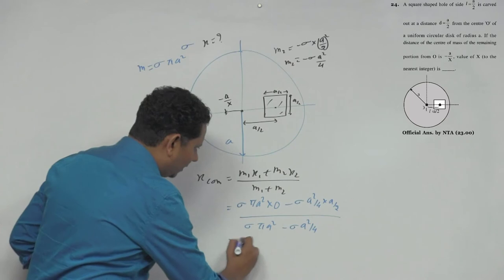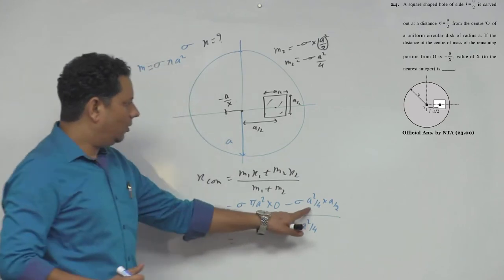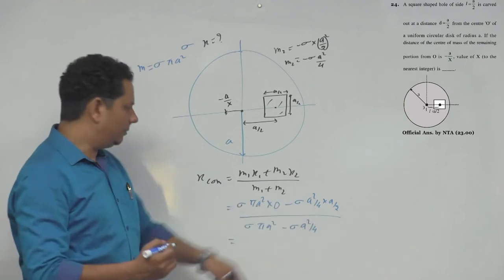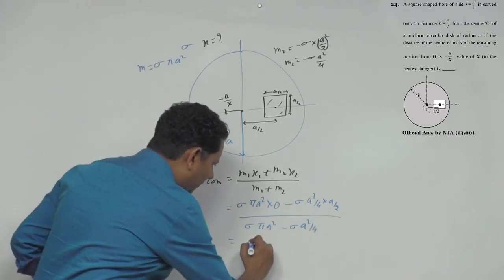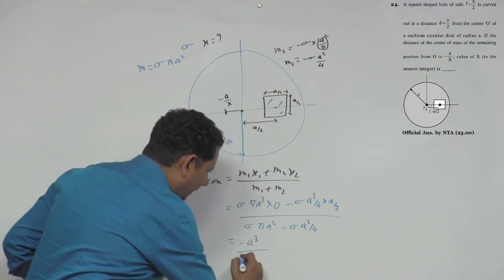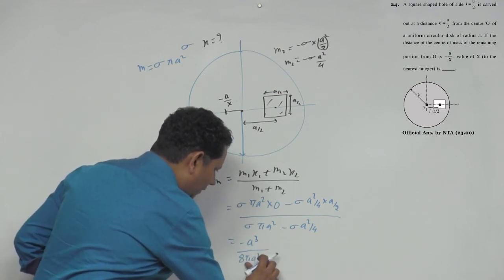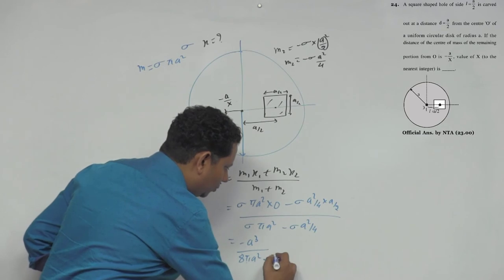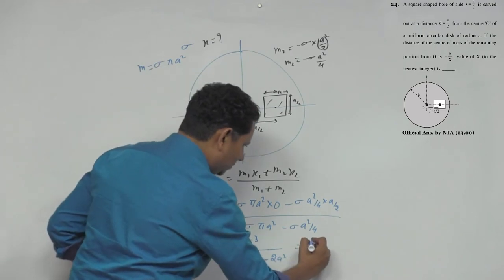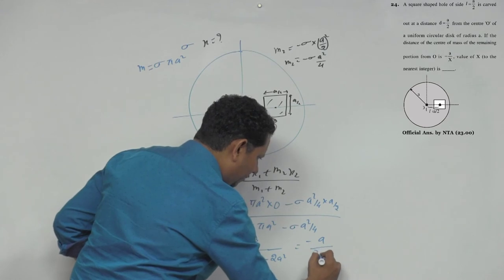Now if we solve this, sigma as we can see will get cancelled, and in fact A square is cancelled. If we multiply by 8, we will get A cube divided by here we will get 8 pi A square minus 2 A square. And if we take A square common, this will be minus A square cancel, so minus A divided by 8 pi minus 2.